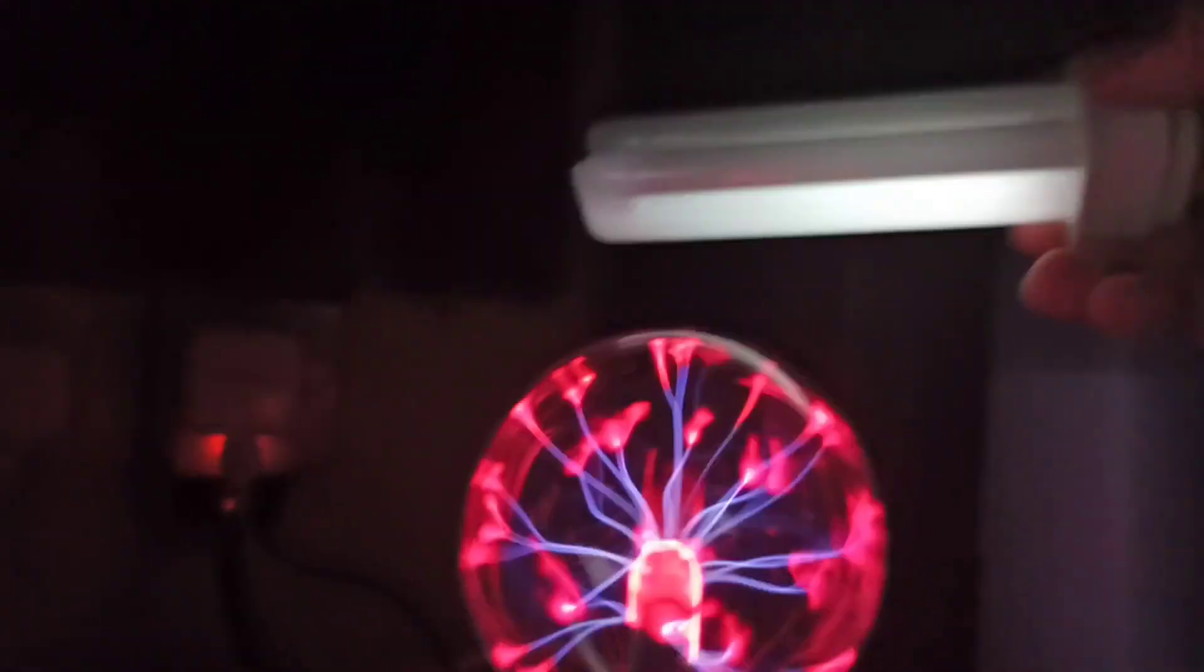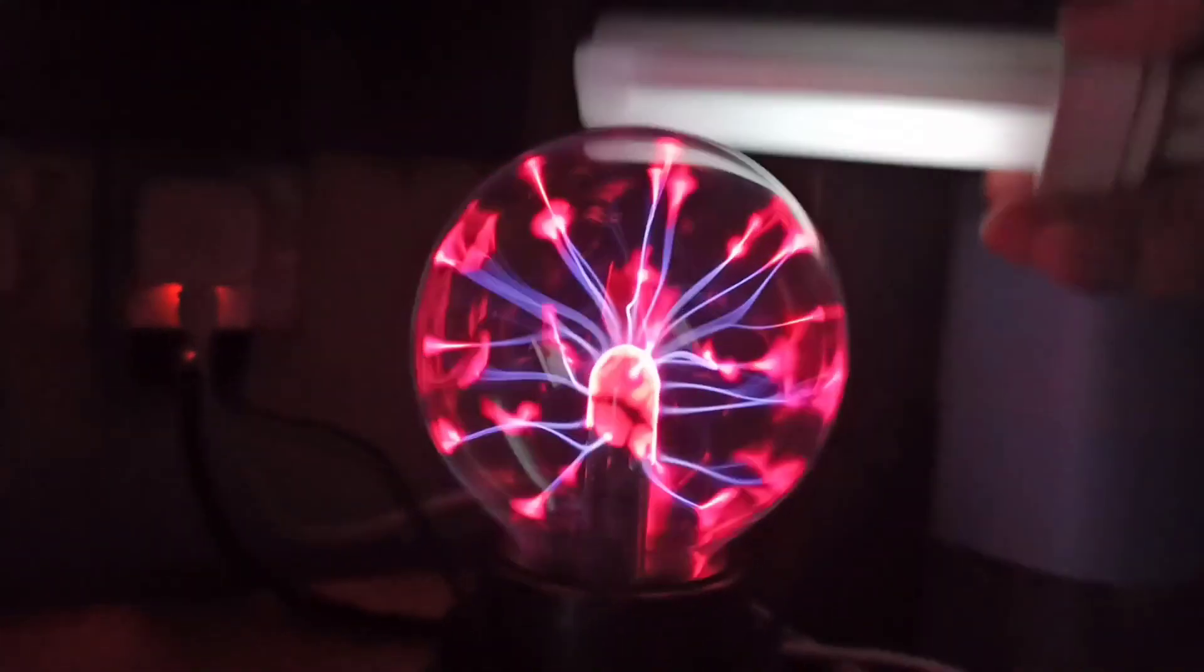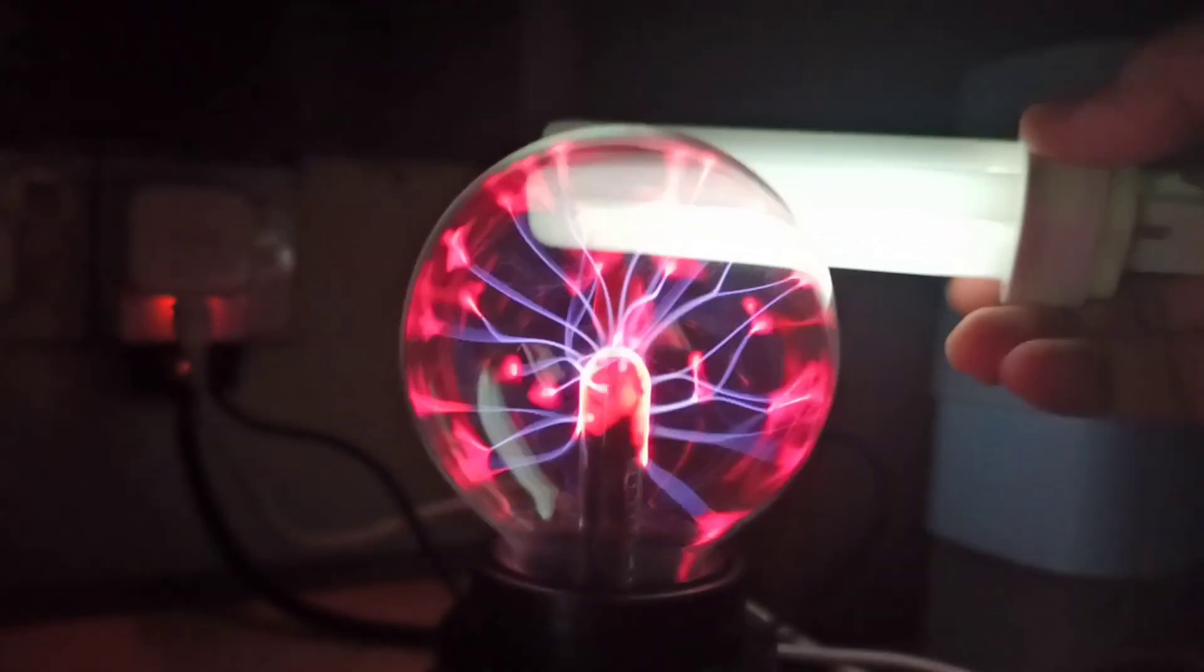So when I put it further away, you can see it is not glowing, but nearby it will glow. So first we need to understand how the fluorescent light glows. Inside the fluorescent bulb it consists of mercury vapor or mercury gas, you can say.